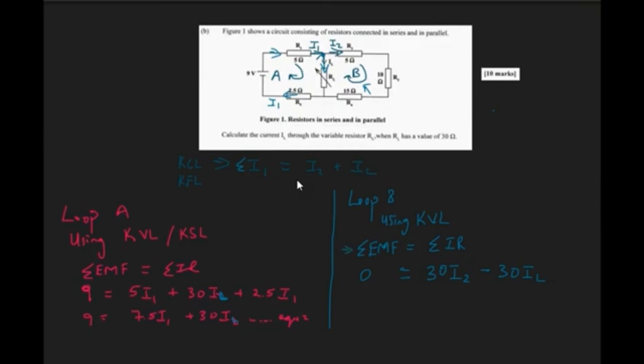So to continue, we would go straight into talking about the sum of the EMF in that loop, loop B, is equal to the sum of the potential drop across each of the components. Now, across R2, R3, R4, it's the same current that will be flowing. So what I went ahead and did was to count up all of the resistance, basically, that ended up giving me 30 ohms.